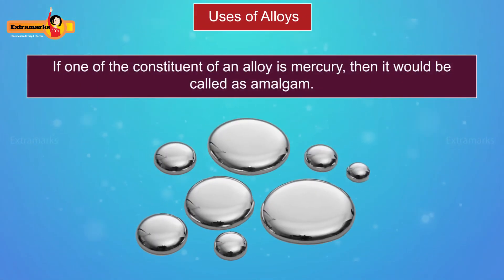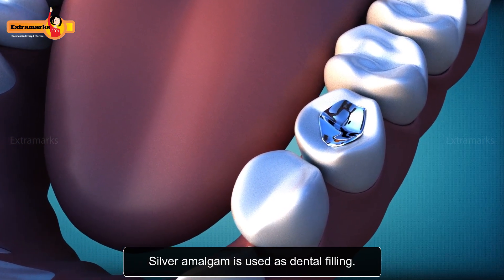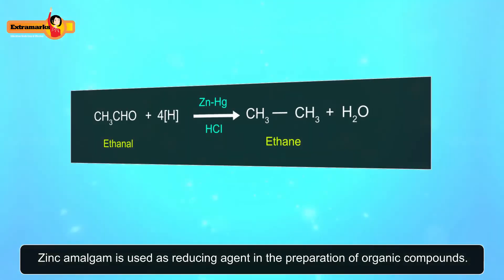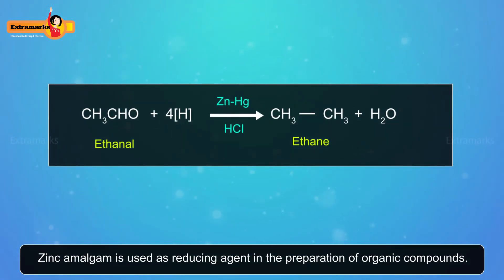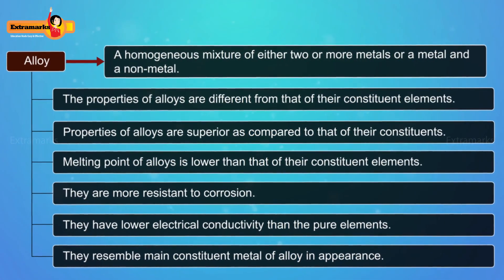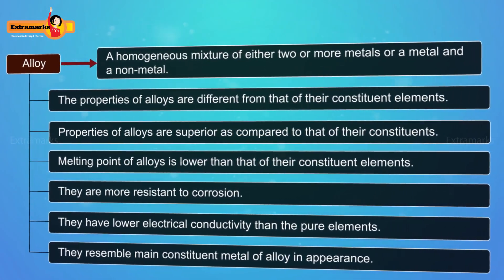If one of the constituents of an alloy is mercury, then the alloy is called an amalgam. Silver amalgam is used as dental filling, and zinc amalgam is used as a reducing agent in the preparation of organic compounds. So we can say that alloys are important and useful to us.